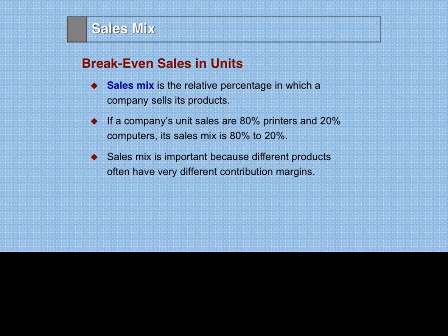First of all, we must look at the sales mix — that is, the relative percentage of each product a company sells. If a company's unit sales are 80% printers and 20% computers, its sales mix is 80-20. A company generally knows what kind of sales mix it has because consistently over time it will sell the same proportion of products relative to other products.